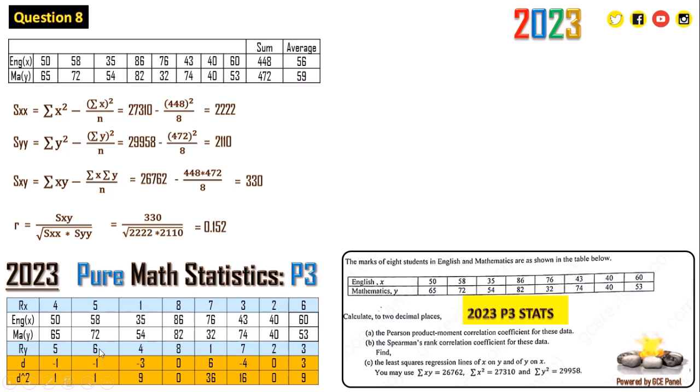Now we are going to do a ranking for the scores for Maths. The smallest score is 32, next 40, number 3 is 53, number 4 is 54, number 5 is 65, number 6 is 72, number 7 is 74, and number 8 is 82. Now we get the difference of the ranks, the rank for English and the rank for Maths. For this first column we have 4 minus 5 which is negative 1. The next one is 5 minus 6 which is negative 1 again, 1 minus 4 which is negative 3, 8 minus 8 is 0, 7 minus 1 which is 6, 3 minus 7 which is negative 4, 2 minus 2 which is 0, and 6 minus 3 which is 3.